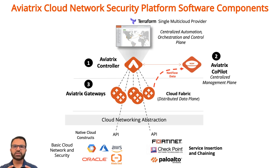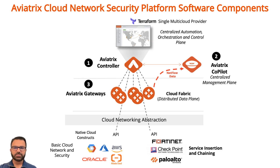Aviatrix creates an overlay network that works in single cloud, multiple clouds, and hybrid clouds. It provides one cloud fabric across AWS, GCP, Azure, OCI, Alibaba, and more.